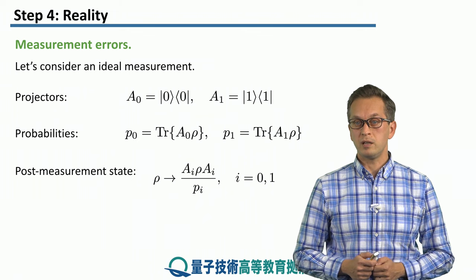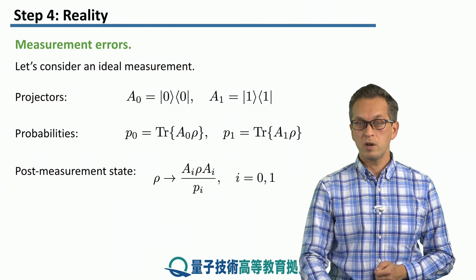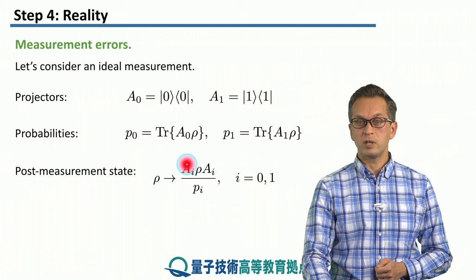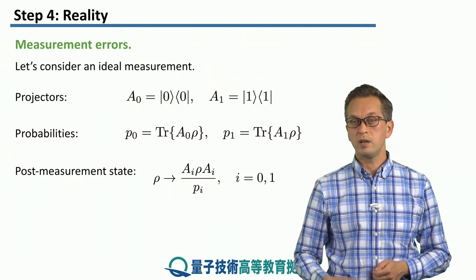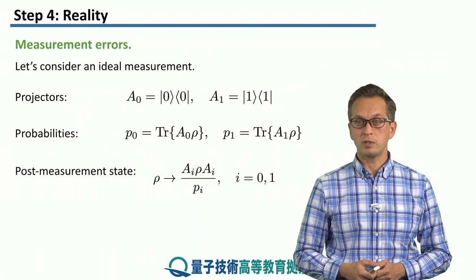So if we get the measurement outcome as zero, we apply A0 times rho times A0, renormalized by P0. And similarly, if we obtain the measurement outcome of one.